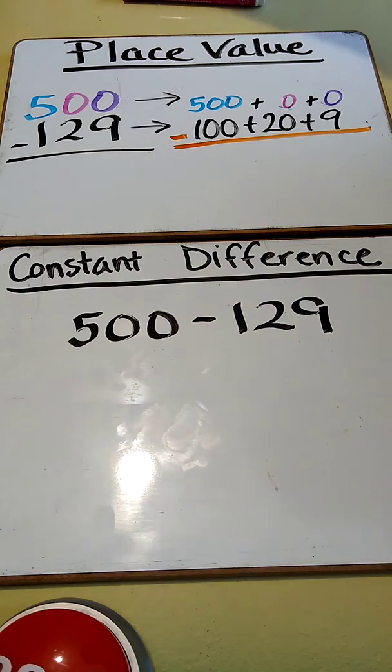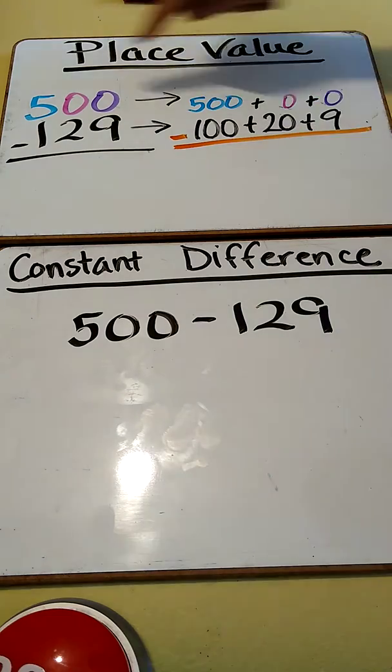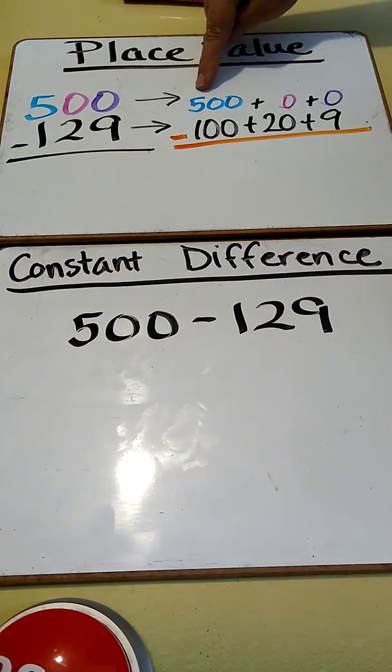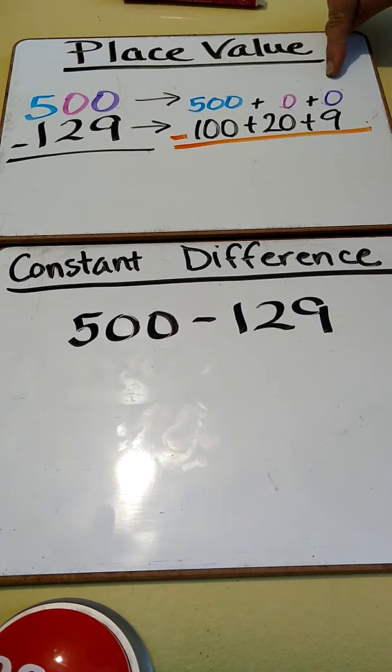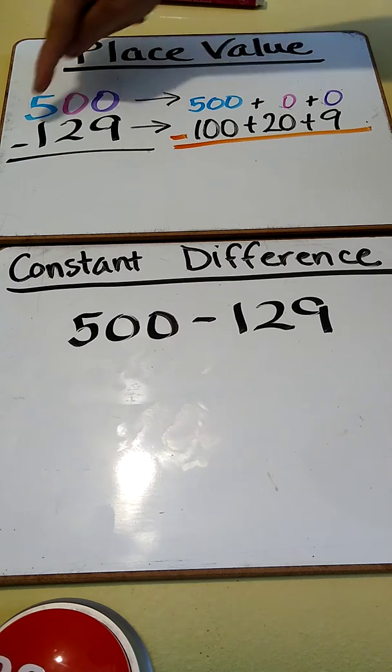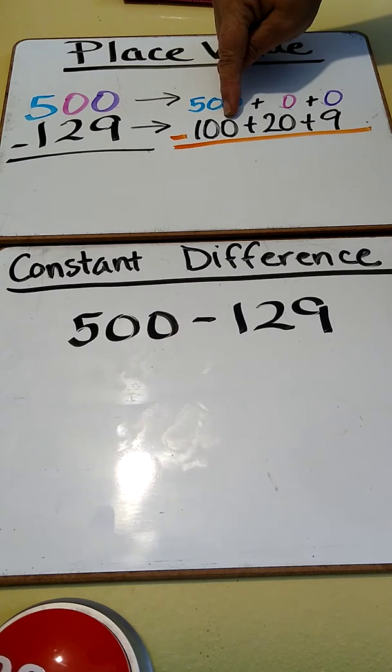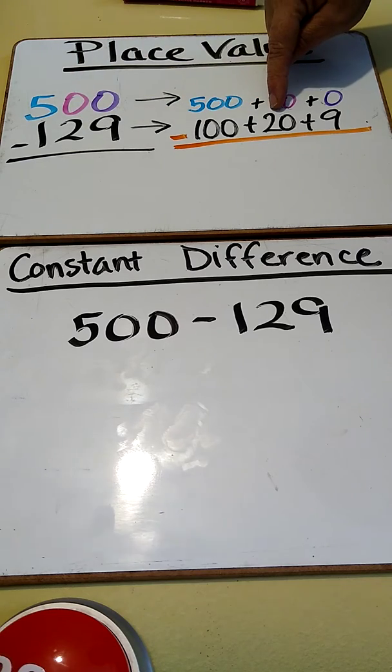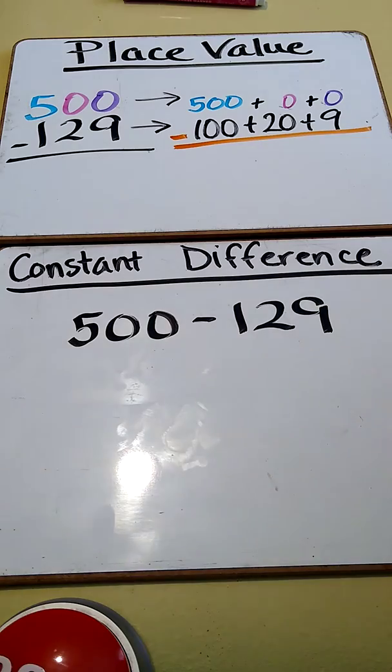So, if I'm doing the constant difference, and I'm going to use my orange to regroup here, I already went ahead and used expanded form to set up my numbers. 500, the 5 is worth 500, the 0 in the tens place is worth 0, the 0 in the ones place is worth 0, and 129, the 1 is in the hundreds place, it's worth 100, the 2 is in the tens place, it's worth 20, and the 9 is in the ones place, worth 9.